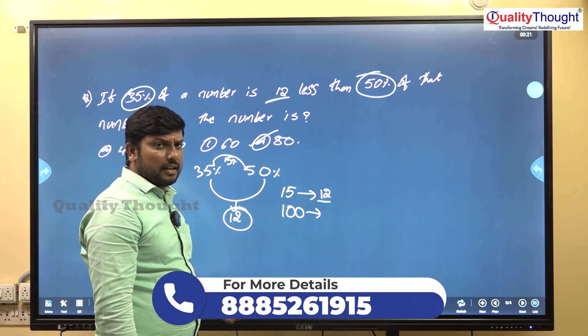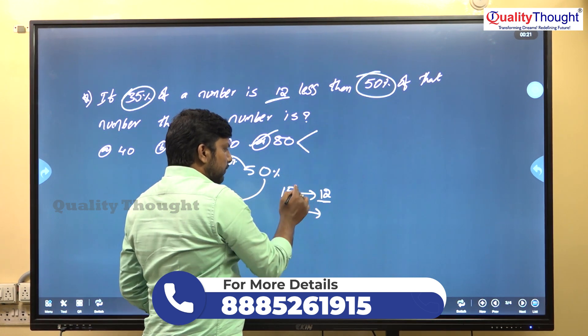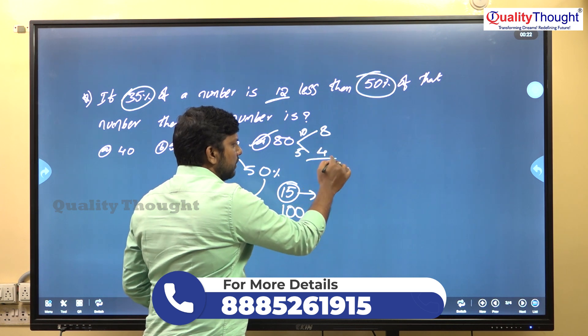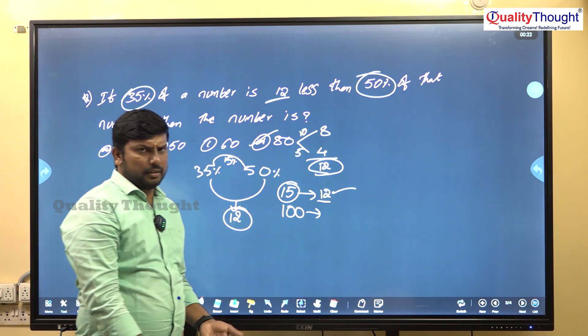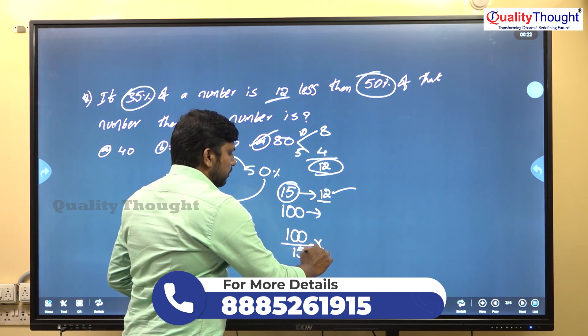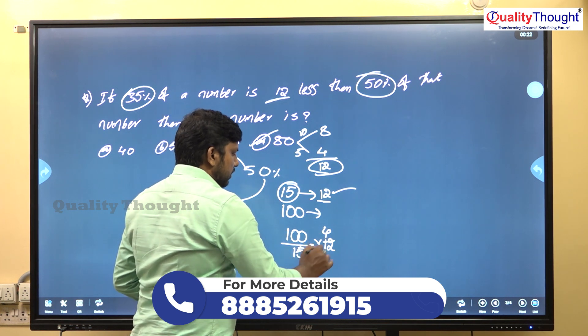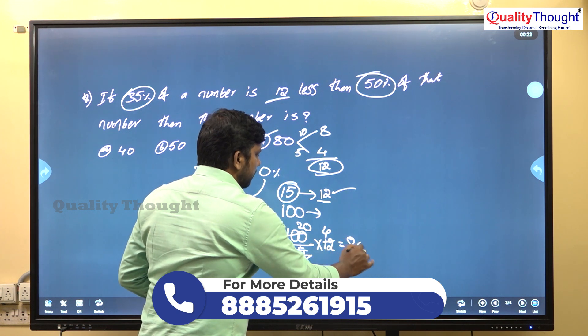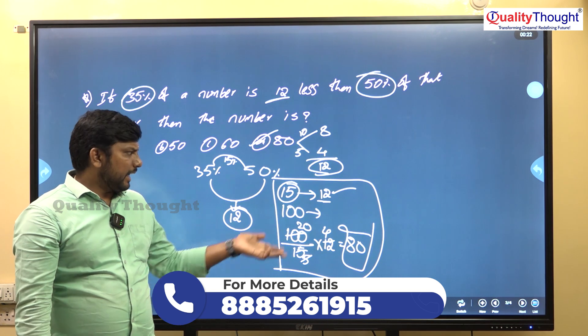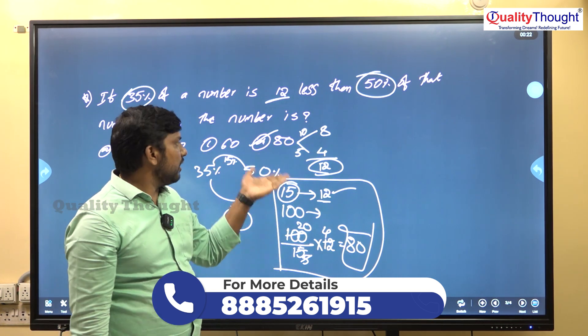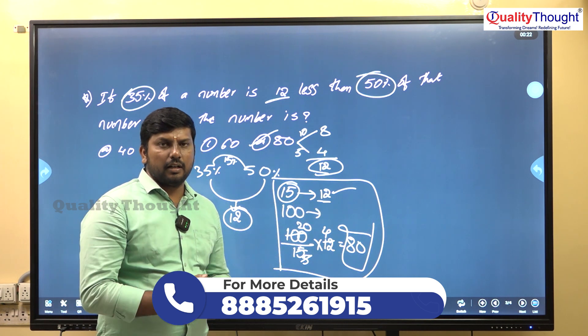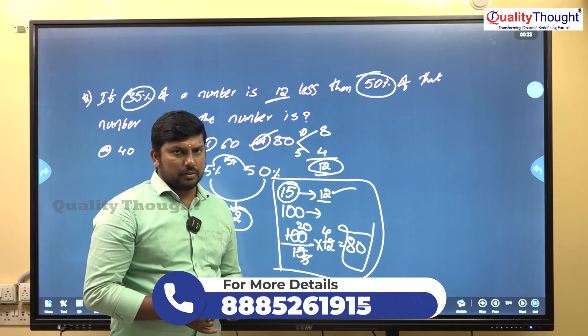Since 9 rupees is less than 12 rupees, 60 rupees is too small, so we consider the higher option. Let's cross-check with 80 rupees. 10 percent of 80 is 8 rupees, and 5 percent is 4 rupees, which equals 12 rupees. So the answer is 80 rupees. Or use cross multiplication: 100 by 15 into 12 equals 80. This takes more time. Instead, pick from options using mental calculations.